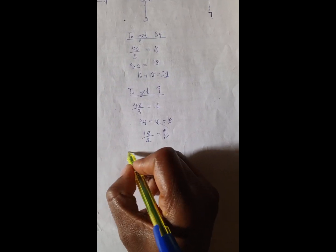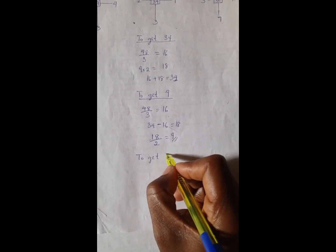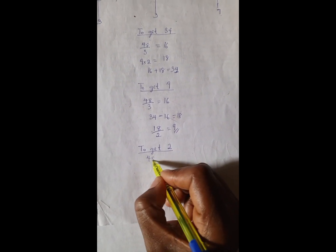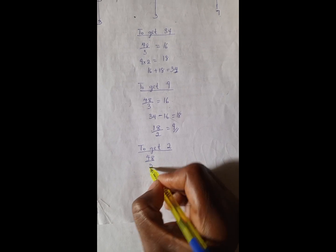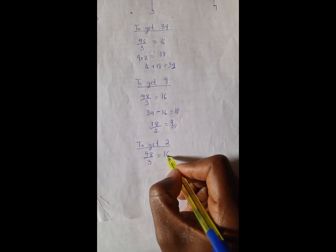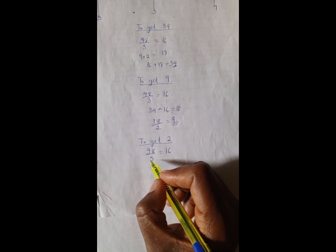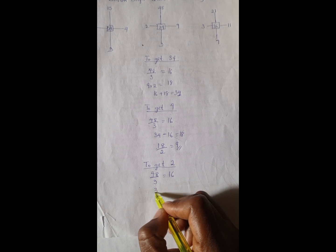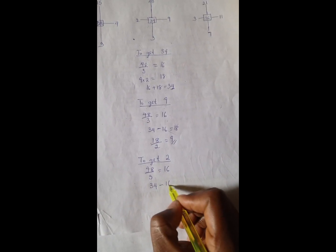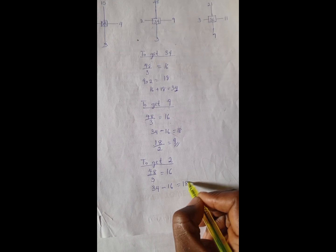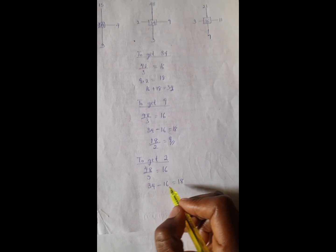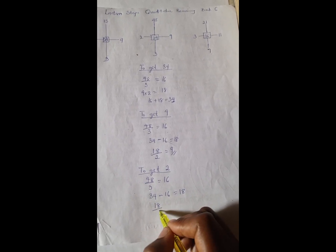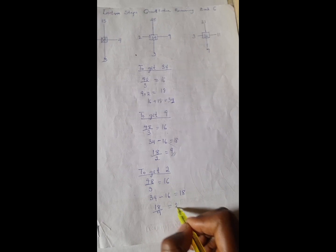So to get 2, we're going to have 48 divided by 3, which will give us 16. And from the example we have 34 minus 16 is 18. So we're going to then have 18 divided by 9 is 2.